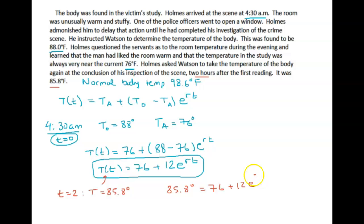If you do 85.8 degrees, it's 76 plus 12 e to the 2r, you're gonna solve for r, and then you get what the decay rate or the cooling rate is.